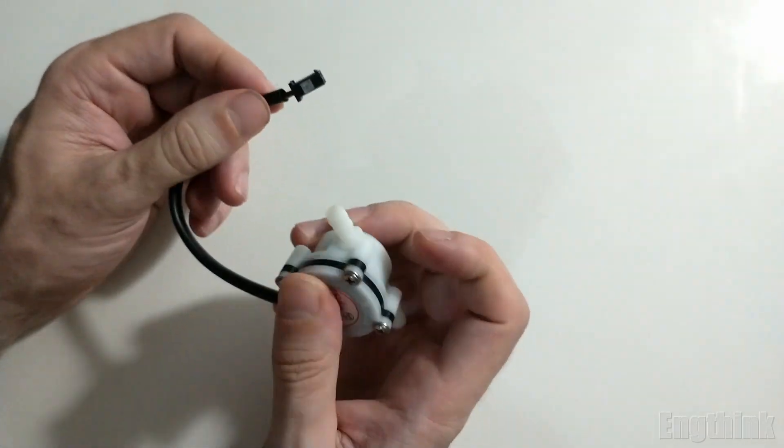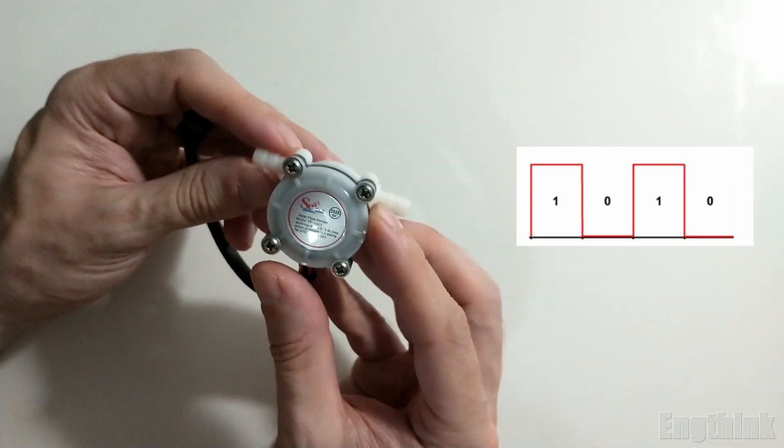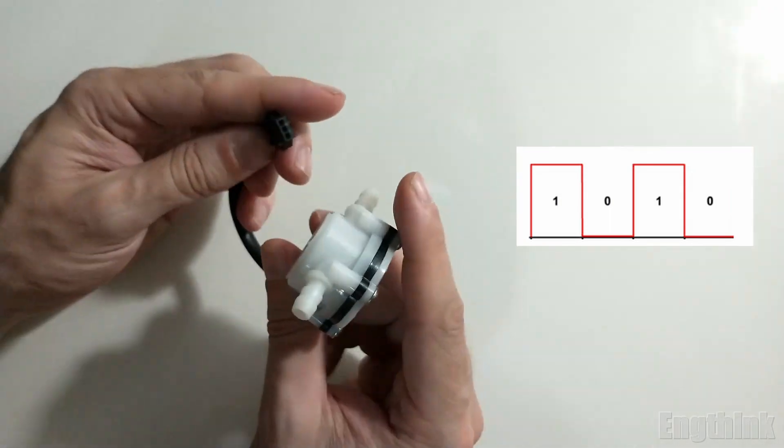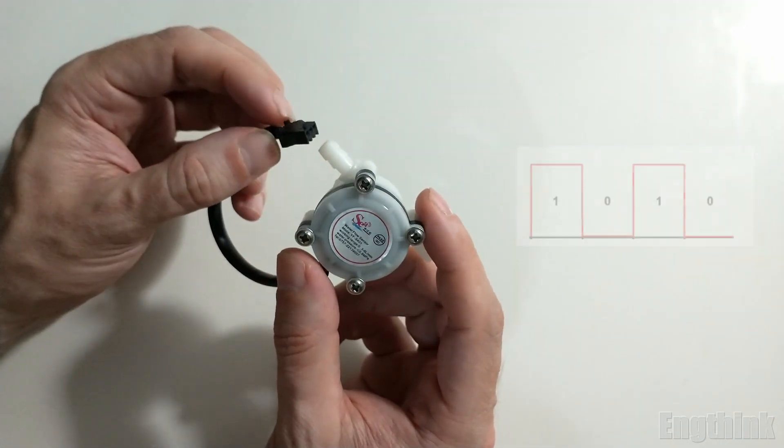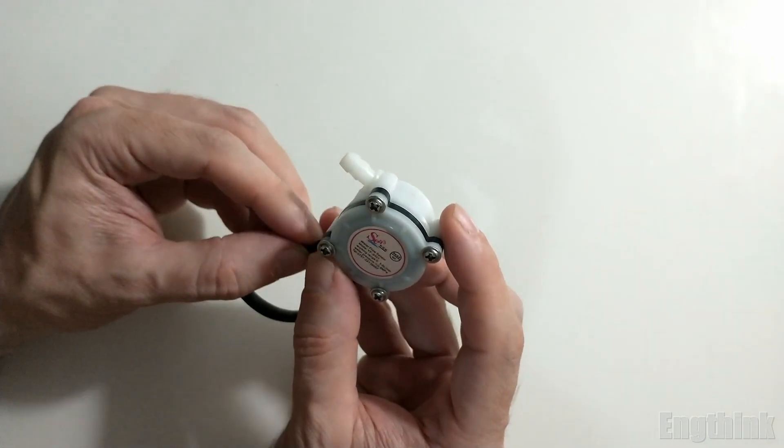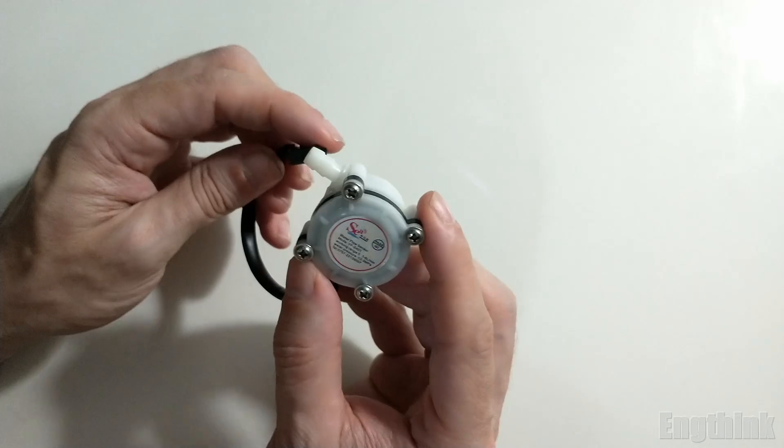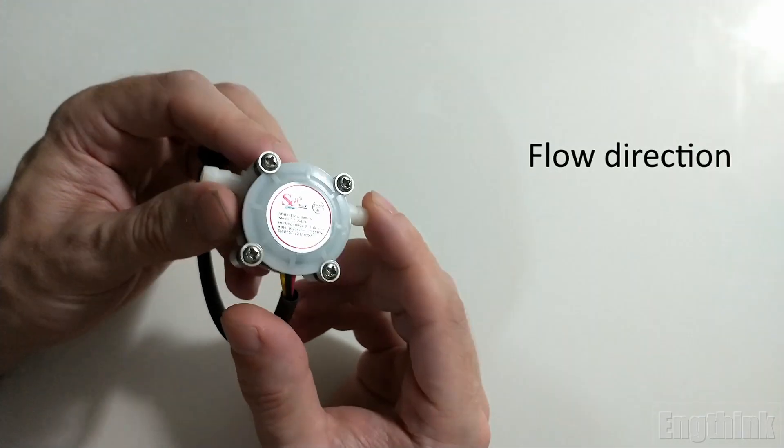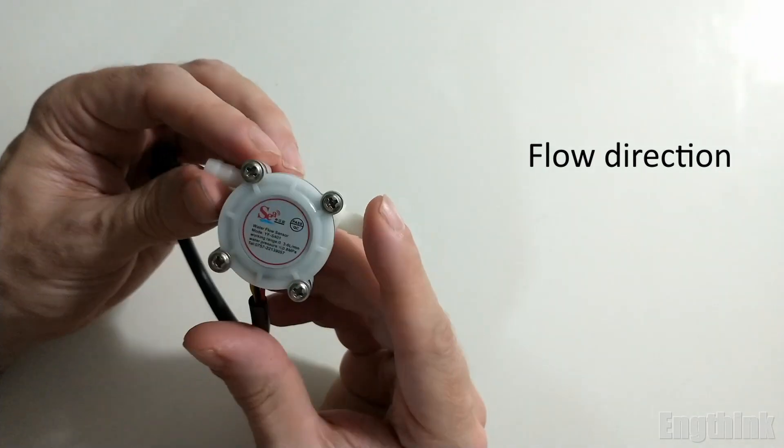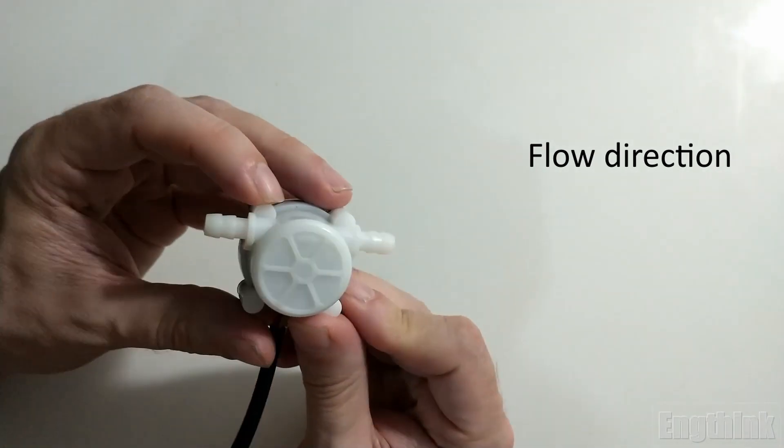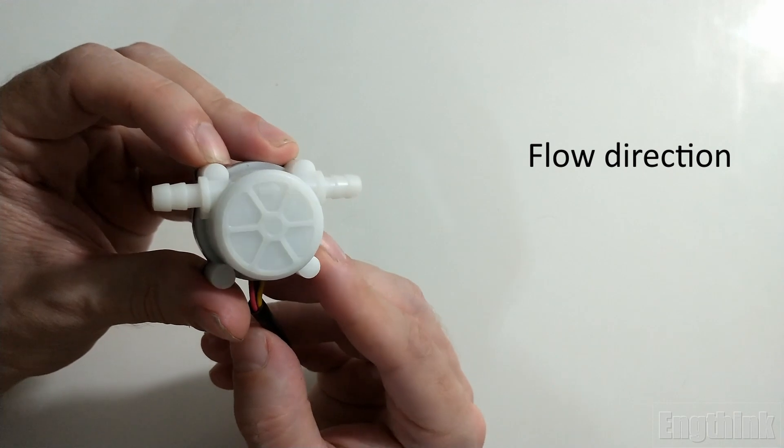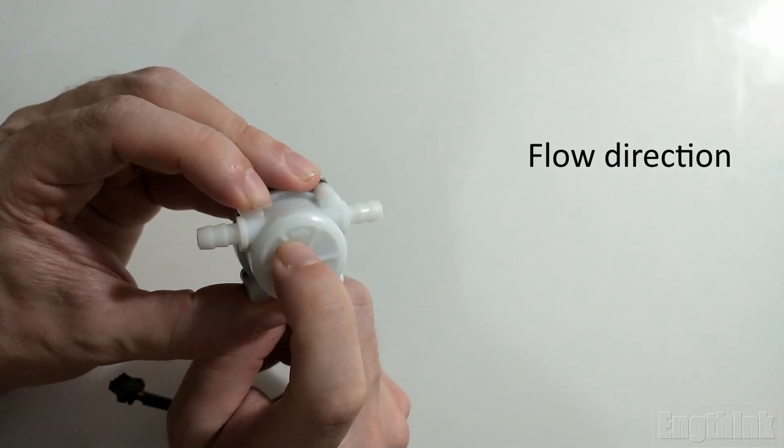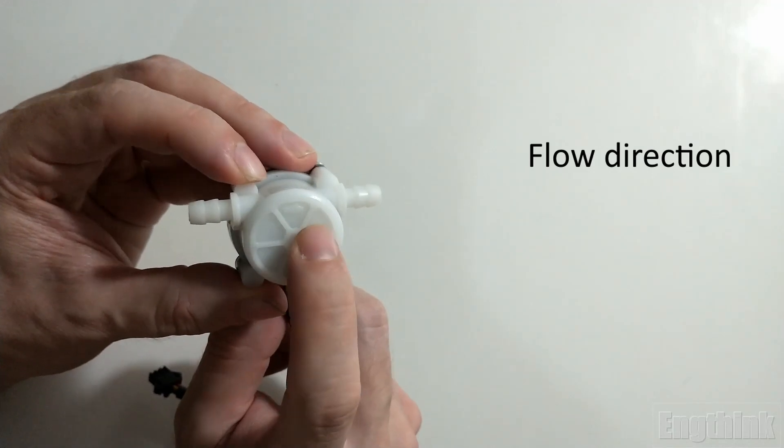This is because we have Hall effect sensors inside that read the turbine rotation inside the flow sensor and generate pulses according to the speed of rotation of the turbine. Another important detail to emphasize is about the direction of the flow.